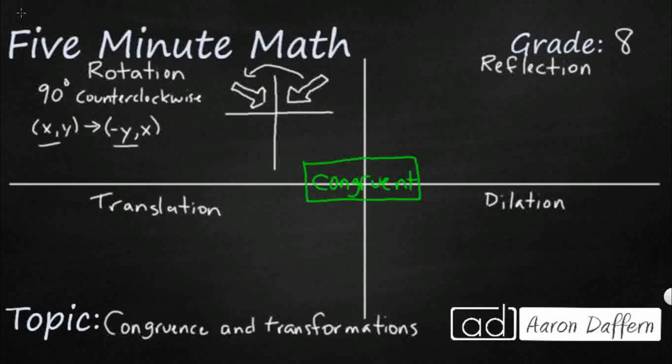It's rotated over towards the left counterclockwise, but I'm keeping the exact same proportions, the exact same side lengths, the exact same area, so it is still going to be congruent. So rotation keeps congruence. We're good to go.